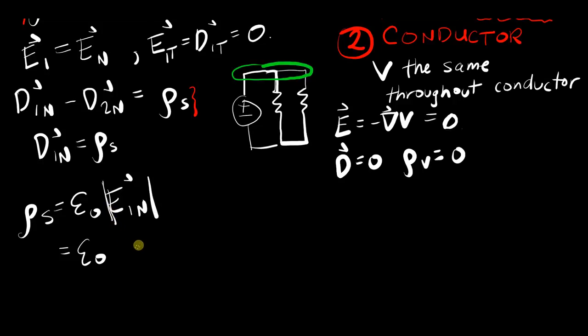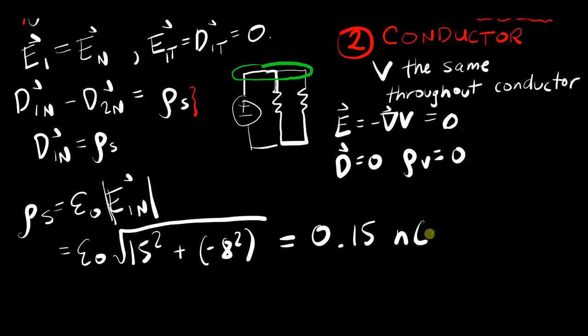So you would go 15 squared plus negative 8 squared, all under a square root. And once you've worked that out, you would get 0.15 nanocoulombs per meter squared, and that turns out to be what your ρs is.